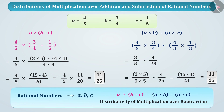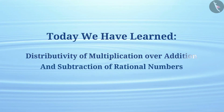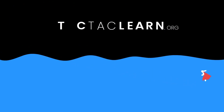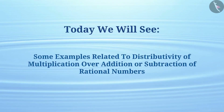Now you must have understood distributivity of multiplication over addition and subtraction. Today we learned distributivity of multiplication over addition and subtraction of rational numbers. In the next video we will see some examples related to them. Today we will see some examples related to distributivity of multiplication over addition or subtraction of rational numbers.